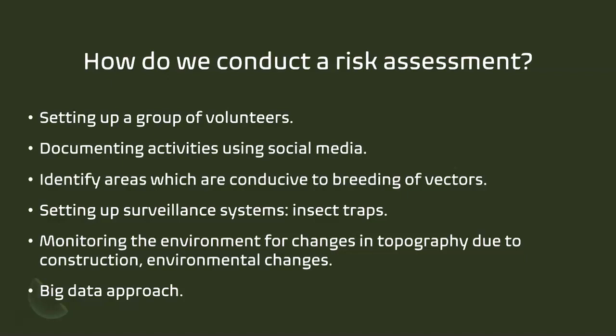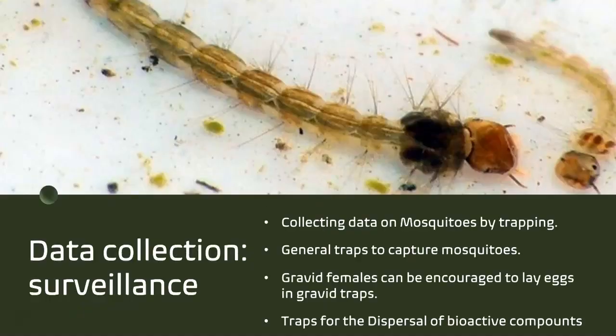Surveillance using traps is the key practical tool. There are two types: one traps all mosquitoes using a net with an attractant, usually carbon dioxide — for example, jaggery or sugar with yeast serves as a CO2 attractant, and mosquitoes enter and get asphyxiated. There are also gravid traps, which are a mesh placed on water — the female lays eggs through the mesh into the water but cannot escape once they hatch. There are also traps which can be used for bioactive compounds.